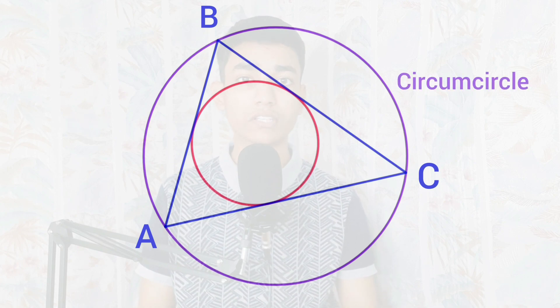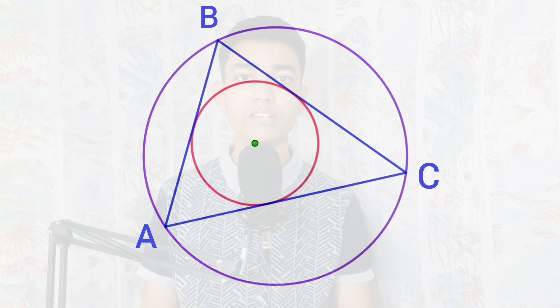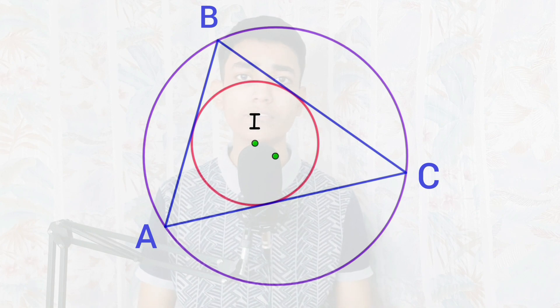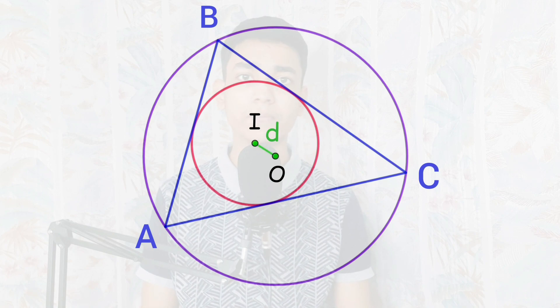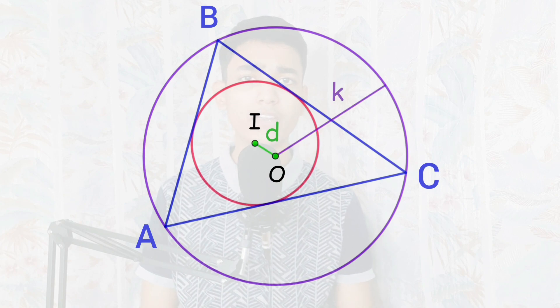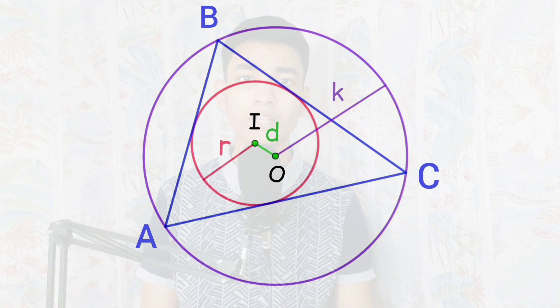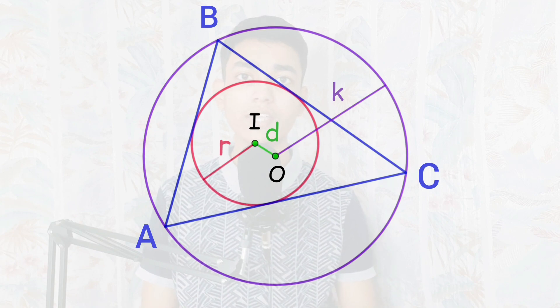We take a circle, inscribe a triangle inside it and label its corners as A, B, C. We then inscribe a circle inside this triangle. The circle in which the triangle is inscribed is known as the circumcircle, and the circle inscribed inside the triangle is known as the incircle. Let the center of the incircle be I and the center of the circumcircle be O. Let the distance between the centers be variable D, the radius of the circumcircle be variable K, and the radius of the incircle be variable R.